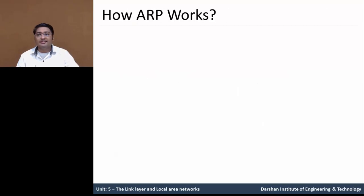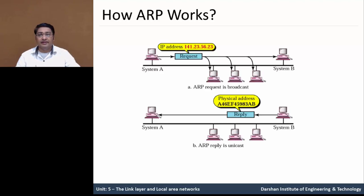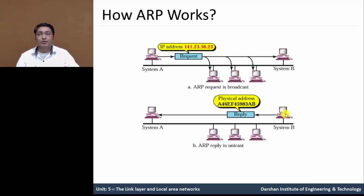Let us understand how ARP works. In this figure, we have system A and system B. System A, having IP address 141.23.56.23, sends an ARP request that is broadcast to the other nodes. System B replies — in this figure, the ARP reply is unicast from system B to system A. It replies with the physical MAC address of system B. ARP protocol is responsible for mapping an IP address to the MAC address, and vice versa, MAC address to the IP address, which is called reverse ARP.